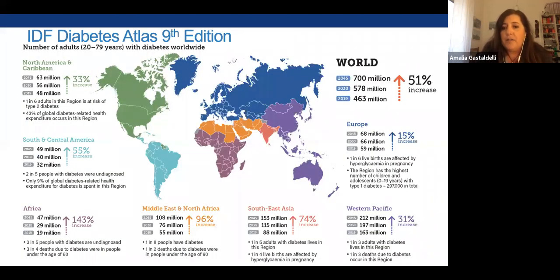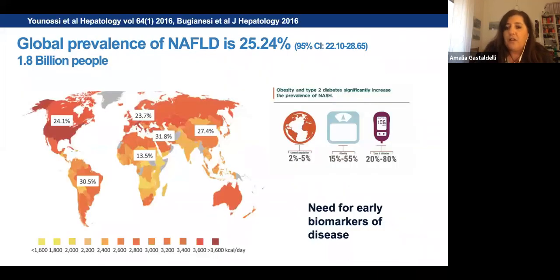Why type 2 diabetes? Because it is one of the major diseases affecting the world population right now — over 400 million people are affected by type 2 diabetes, and we are expecting a 51% increase in the coming years. The same is true for NAFLD, whose prevalence is now more than 25% in the general population, going up to 80% in type 2 diabetes and severe obesity.